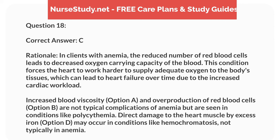Correct answer: C. Rationale: in clients with anemia, the reduced number of red blood cells leads to decreased oxygen-carrying capacity of the blood. This condition forces the heart to work harder to supply adequate oxygen to the body's tissues, which can lead to heart failure over time due to the increased cardiac workload. Increased blood viscosity, option A, and overproduction of red blood cells, option B, are not typical complications of anemia, but are seen in conditions like polycythemia. Direct damage to the heart muscle by excess iron, option D, may occur in conditions like hemochromatosis, not typically in anemia.